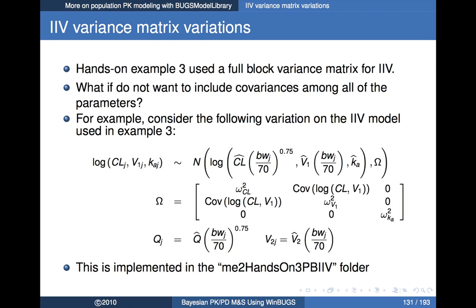What I did is I've come up with a few examples that illustrate some variations on the basic population PK model that we did as part of example 3. The one I'm going to start with is dealing with variations on the structure of the variance matrix used for inter-individual variability.